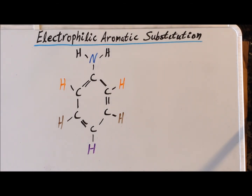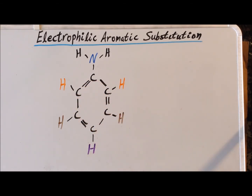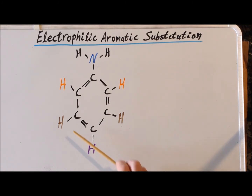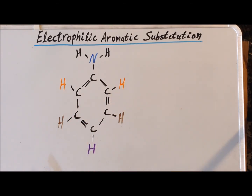The final position, which is three carbons around the ring away from the carbon holding the substituent, is the so-called para position. We've written it here in purple, because para begins with a P and purple begins with a P. Notice that the para position is different from the meta positions, which are both equal to each other, and different from the ortho positions, which are also equal to each other.